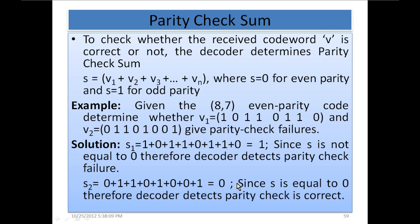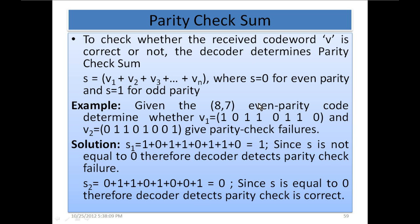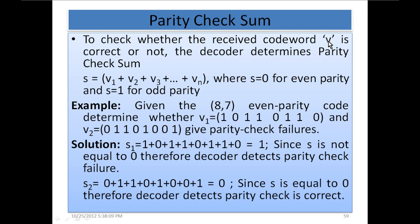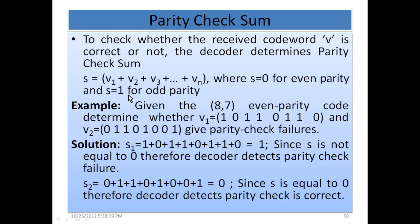To check whether the received codeword V is correct or not, the decoder determines the parity checksum. When the codeword is transmitted, we call it C; when it is received, we call it V. The checksum S = V1 ⊕ V2 ⊕ V3 ⊕ ... ⊕ Vn, where S = 0 for even parity and S = 1 for odd parity indicates correct reception.